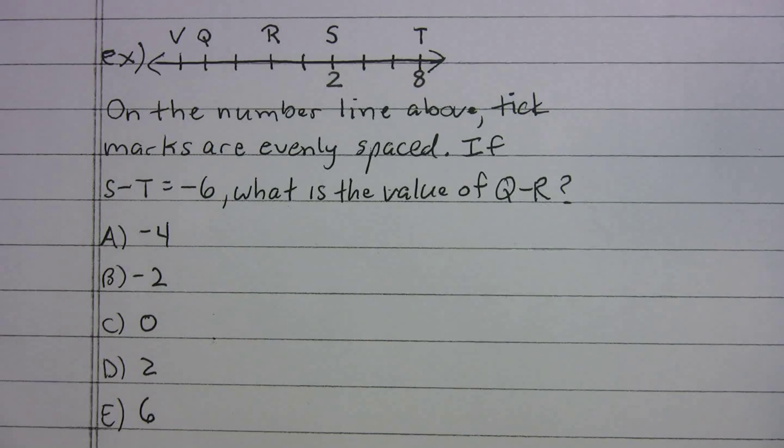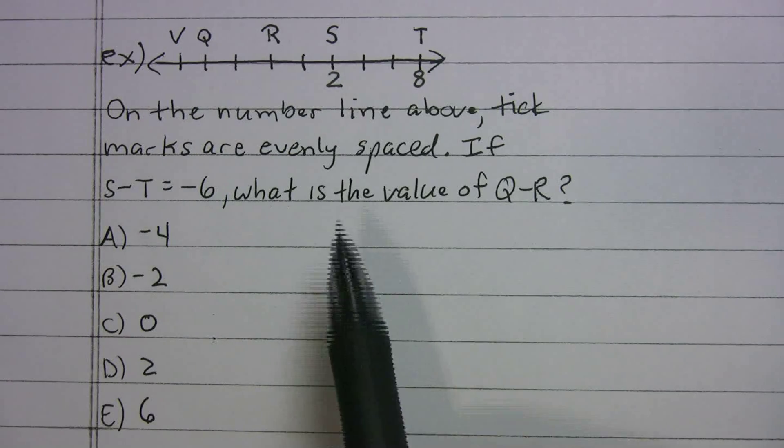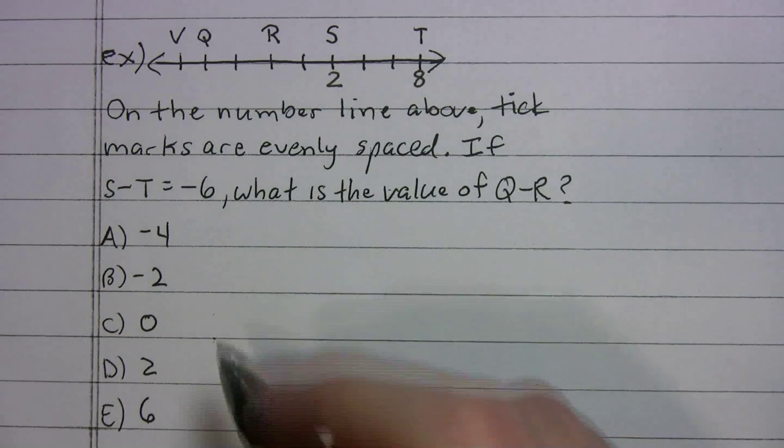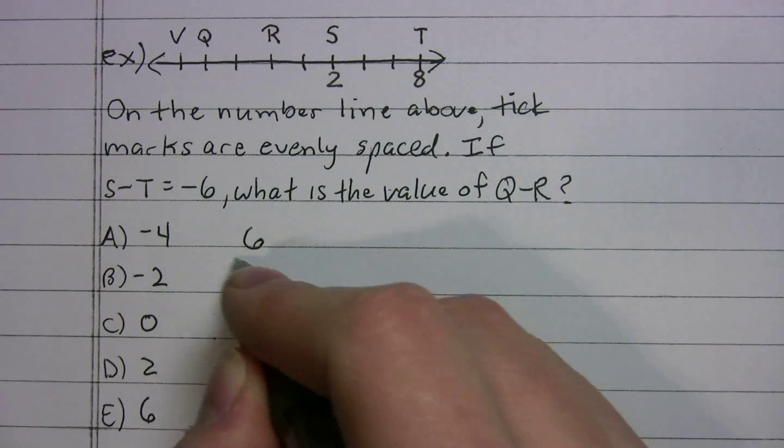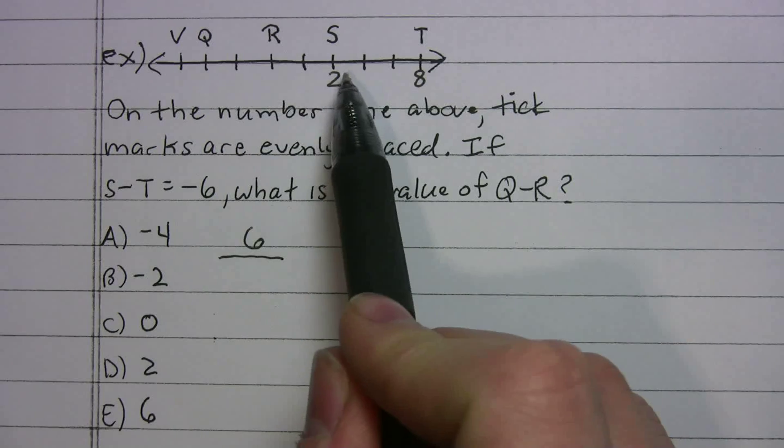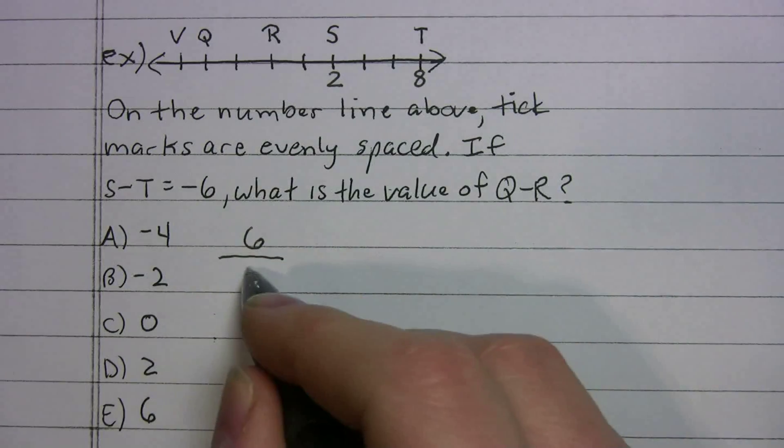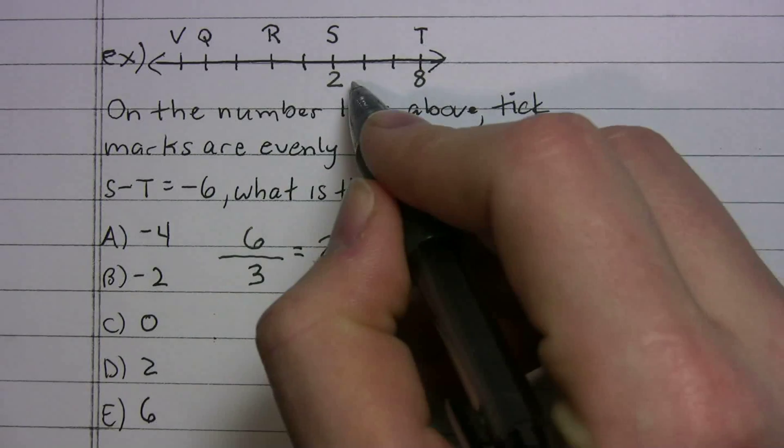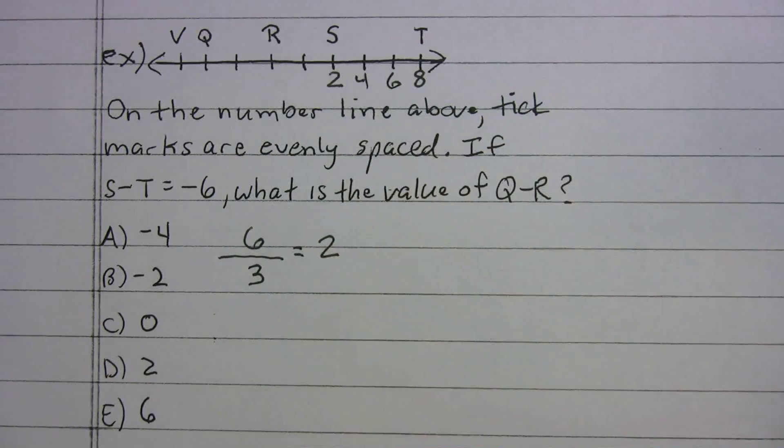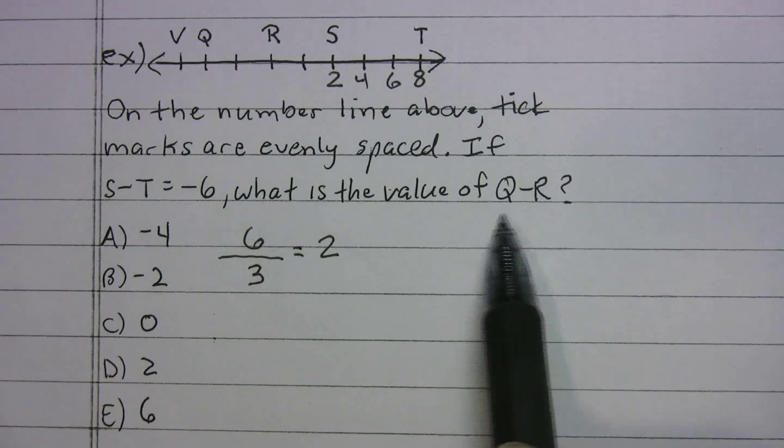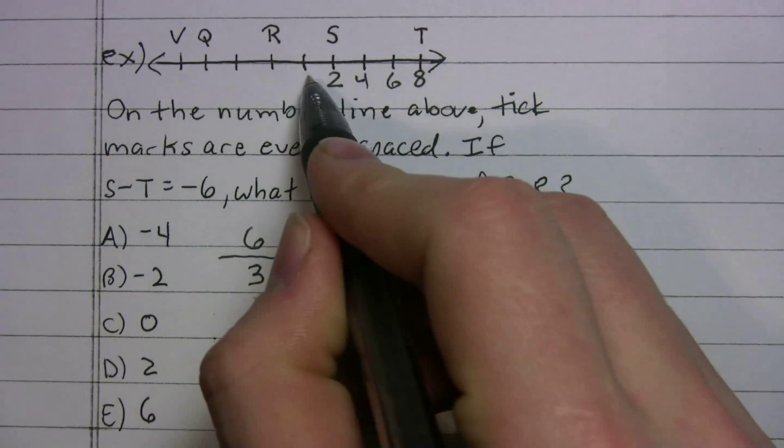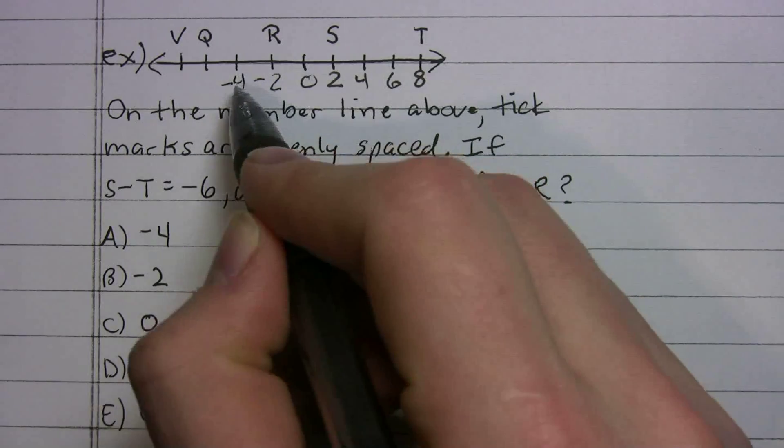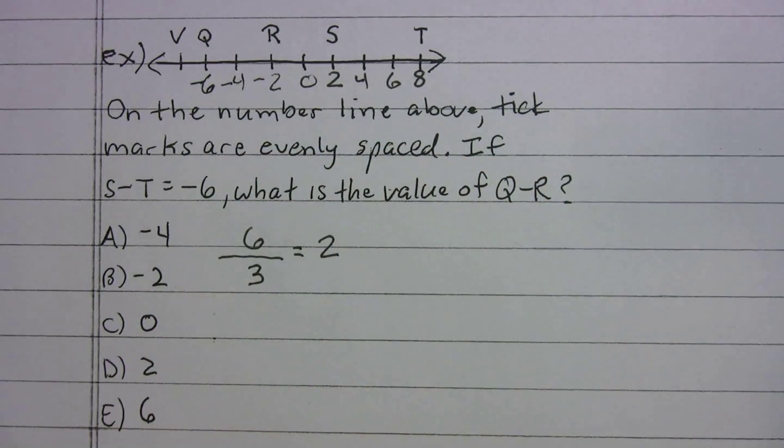And I can use some of the rules that I just showed you in the last problem. What's my total distance here from 2 to 8 is 6, right? How many spaces? One, two, three. So each one should measure 2. So that means that's going to be 4 and that's going to be 6. So now if I want to go back and find q and r, I can really just count backwards. That's 0, negative 2, negative 4, negative 6.